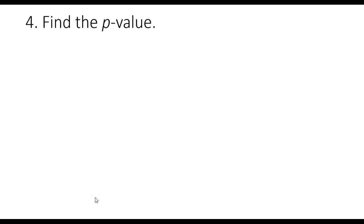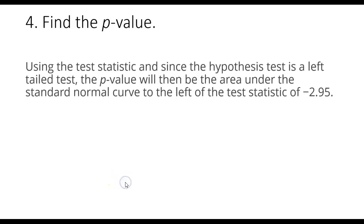We now use that test statistic to find our p-value. We can use the area under the normal curve to find our p-value. Because this is a left-tailed test, we're looking to the area to the left of the test statistic of negative 2.95.